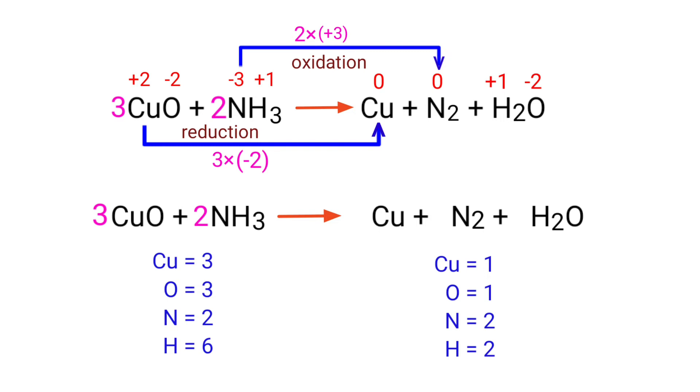The number of atoms are not balanced on both sides. To balance the chemical equation, we need to make use of coefficients. A coefficient is a number that we place in front of a chemical formula.